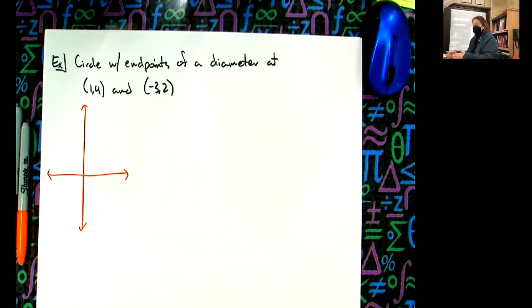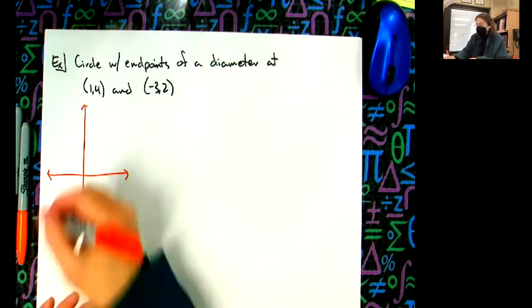Start by drawing a coordinate plane. You don't have to be on graph paper, you can be on graph paper if you want to be precise, but you can just sketch it if you need to. Obviously I don't have graph paper.